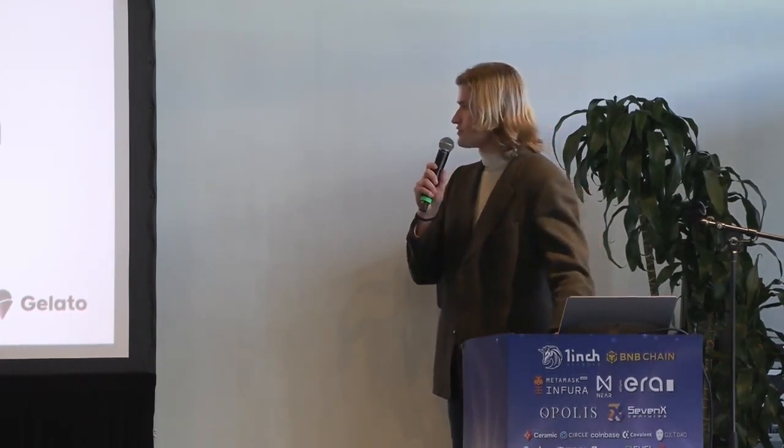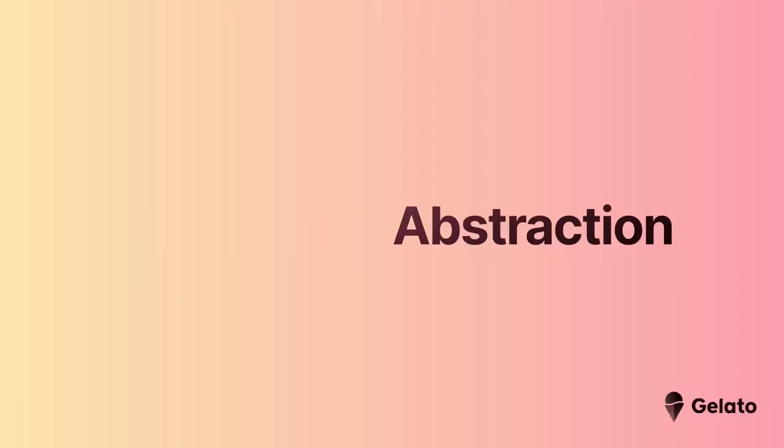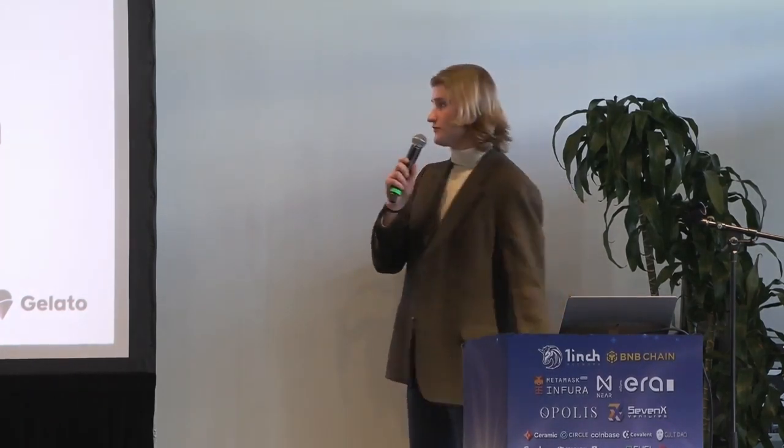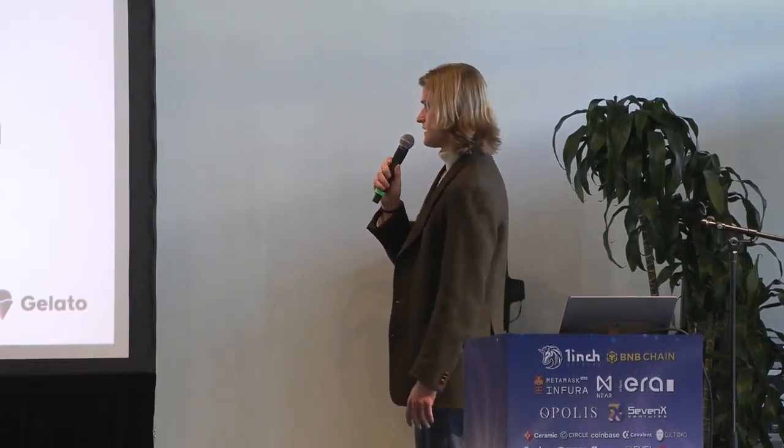If we're going to talk about account abstraction, let's lay down the benefits we want for the next billion people to be onboarded. First up is signature abstraction. At the moment, we only have one type of signature in Ethereum — it's baked into the core protocol, which is great for security. But what if we want different signatures? One day we might need quantum-safe signatures, higher or lower security signatures, or even no signatures at all for some super lightweight app.